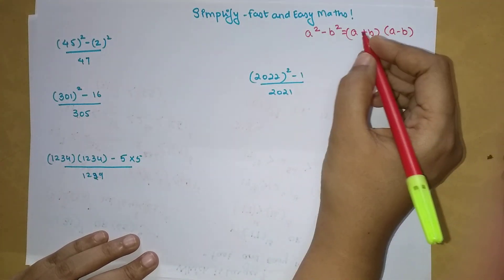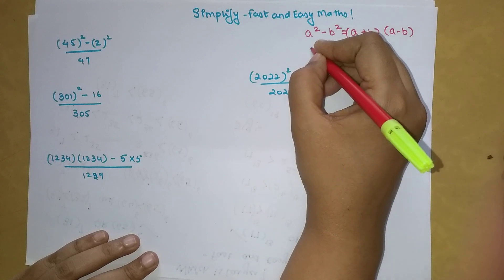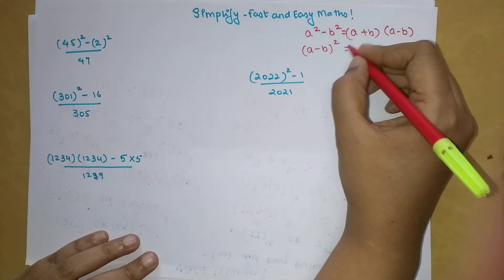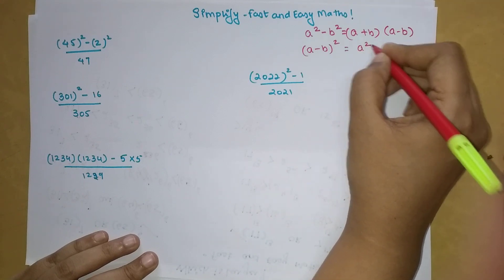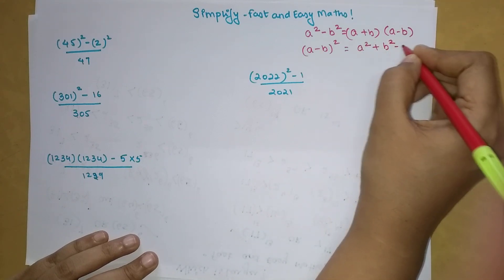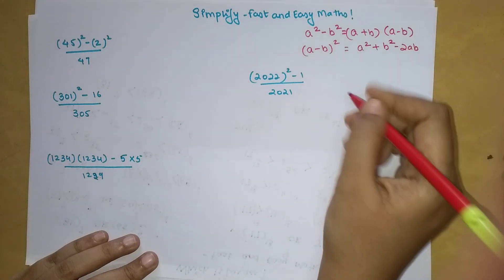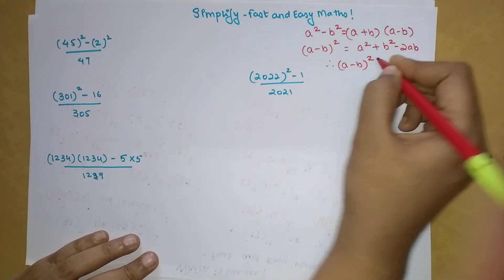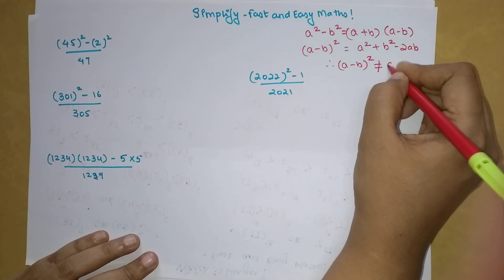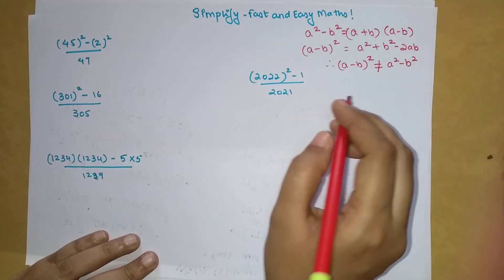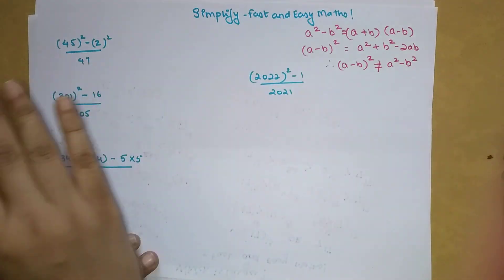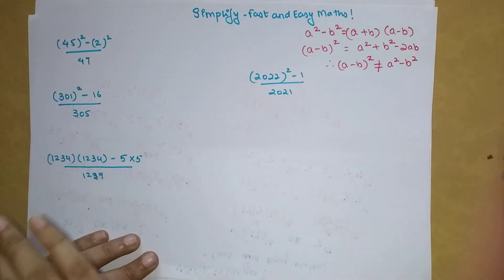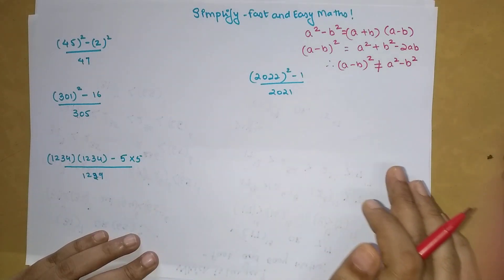Now students, please understand you cannot use the same formula for A minus B the whole square. Why? Because A minus B the whole square expansion is A square plus B square minus 2AB. Therefore, A minus B the whole square is not equal to A square minus B square. This is very important. Please remember this for your life. If you forget this, you will make a lot of mistakes.